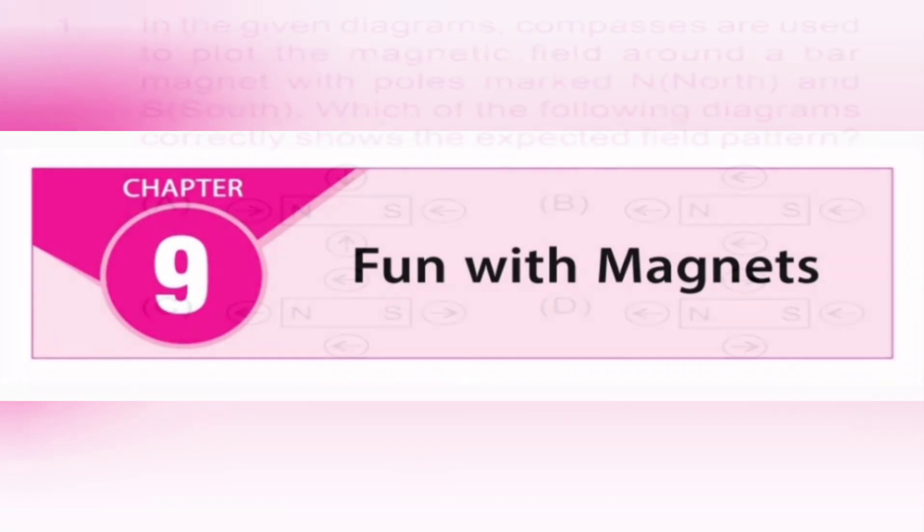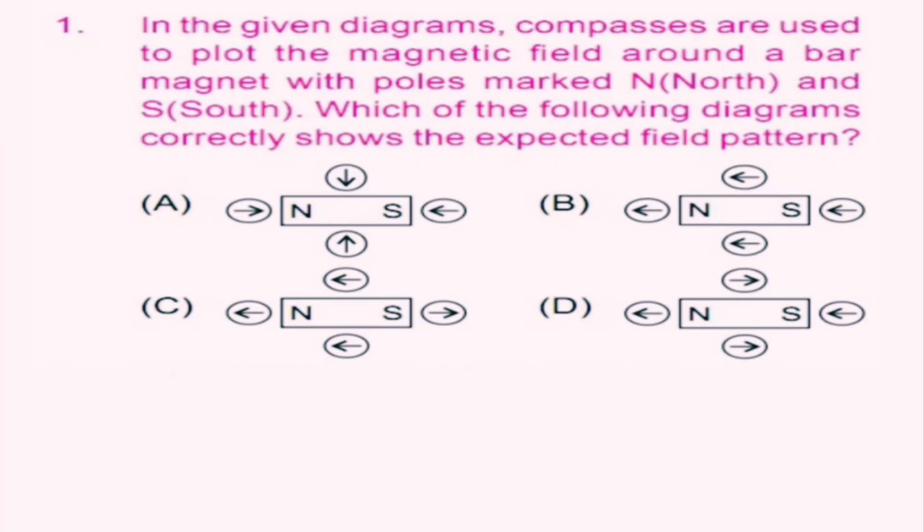Let's start with question number 1. In the given diagrams, compasses are used to plot the magnetic field around a bar magnet with poles marked north and south. Which of the following diagrams correctly shows the expected field pattern?